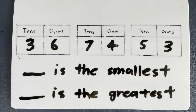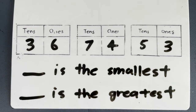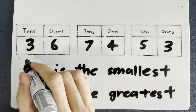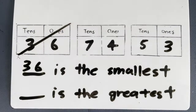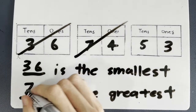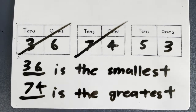Final question before we play some games. Which number is the smallest? Look at the tens. Which is the smallest — 3, 7, or 5? It's 3. So 36 is the smallest — cancel off. Now which is the greatest? 7 tens, so 74 is the greatest. Now let's play some games.